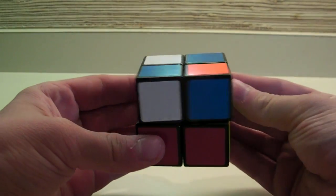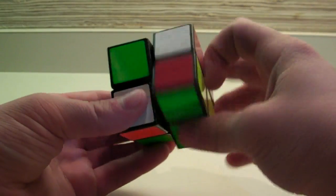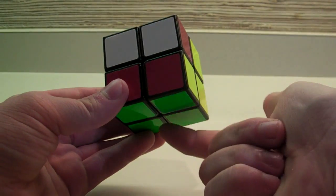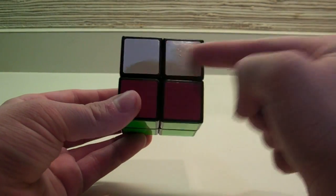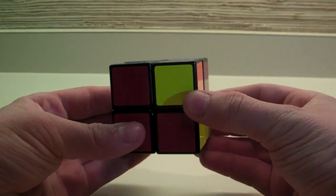Moving on to the OLL, I have the diagonals case, so I will perform the algorithm. And then, since my bottom face is solved, and I have a bar here, I can just do the T permutation, or the algorithm I showed you earlier in this video.